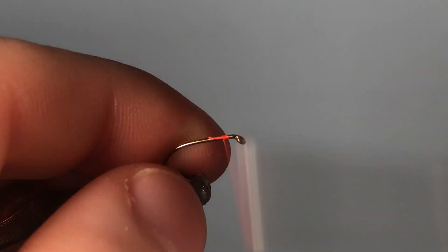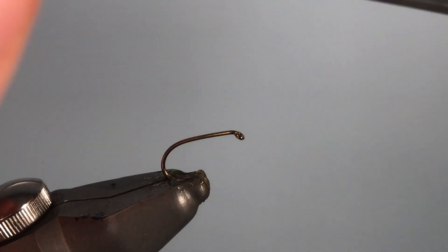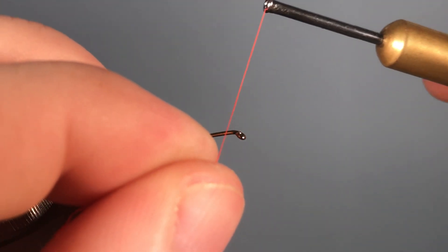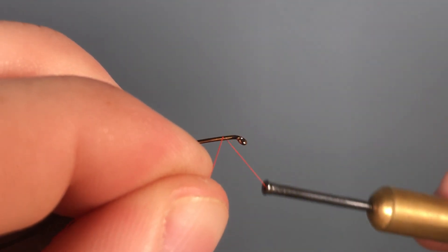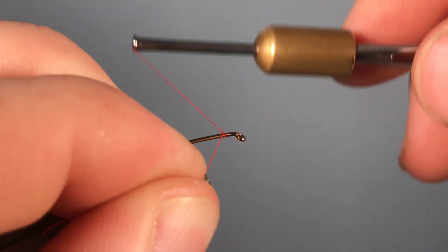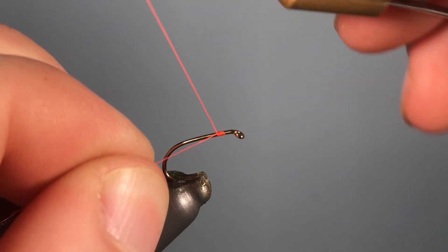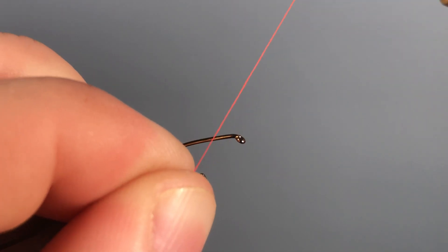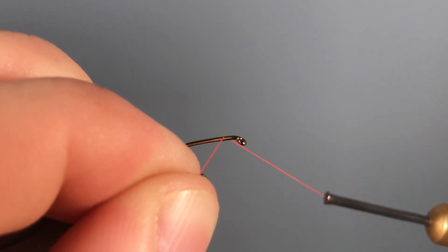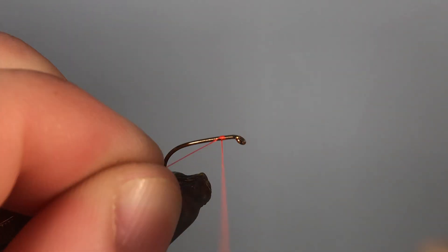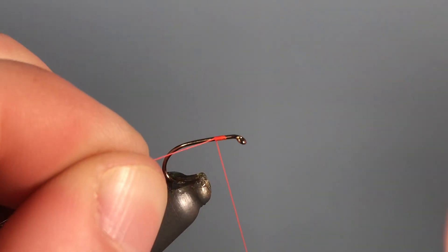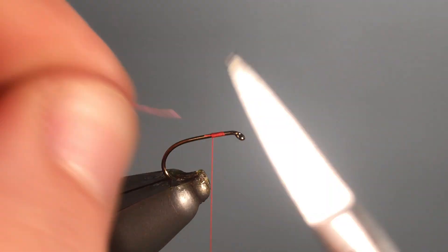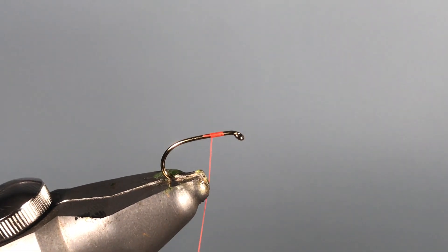So let's do that again. Grab the end of your thread, put your thread over the top of the hook, go underneath like so, and then back over the thread. So that is now onto the hook. What you have to do is put the thread onto the top of the hook and then go back over the thread tag like so. Then it is onto the hook, and then all you have to do is snip off the excess.